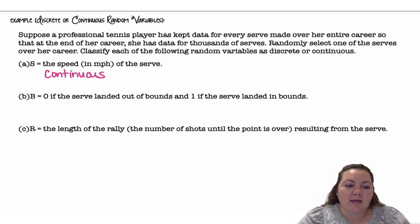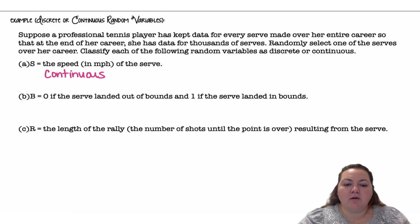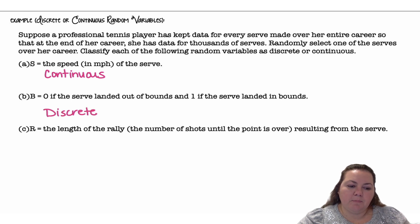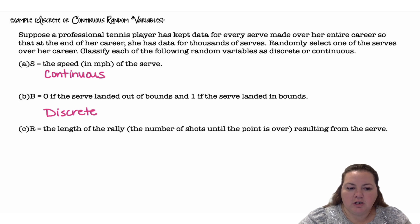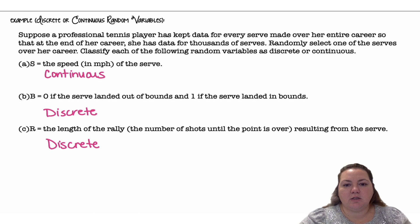Variable B is 0 if the serve landed out of bounds and 1 if the serve landed in bounds. It can only take on those two values, so this is discrete. Variable R is the length of the rally — the number of shots until the point is over. You can't take three and a half shots; you take one, two, three, or four. So this is discrete as well.